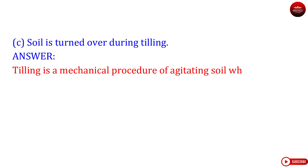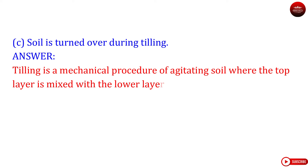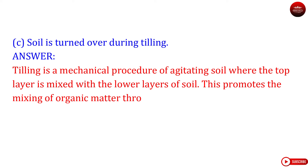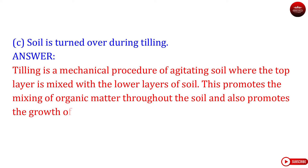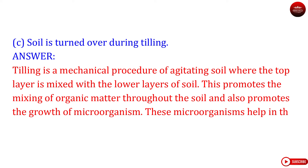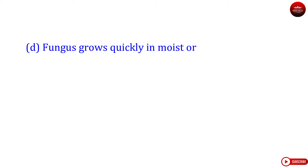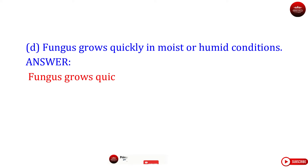For example, the greenish powdery substance which is seen on stale breads is an example of fungus infection. Question C: Soil is turned over during tilling. Answer. Tilling is a mechanical procedure of agitating soil where the top layer is mixed with the lower layers of soil. This promotes the mixing of organic matter throughout the soil and also promotes the growth of microorganisms. These microorganisms help in the conversion of organic matter.